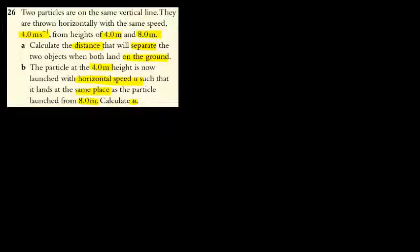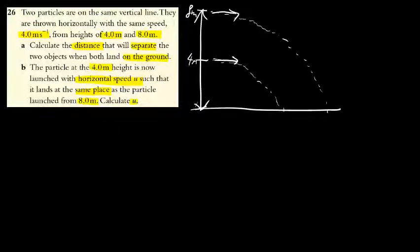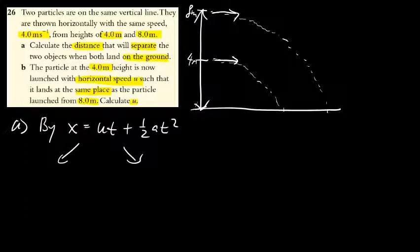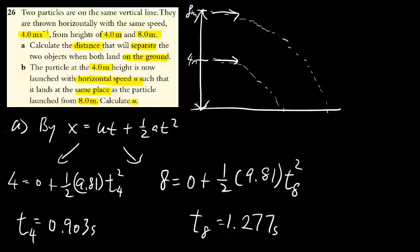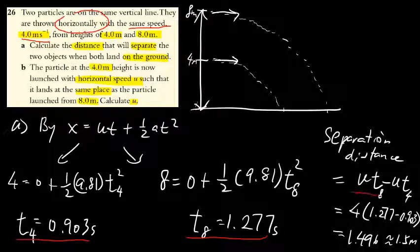The next question: you can see that the question can be transformed into a diagram like this. You consider the vertical motion, and using this equation, you should be able to find the time for 4 meters and x meters of the objects separately. Since the horizontal motion has the same speed, which is 4 meters per second, you can find the separation distance by calculating the horizontal displacement and subtracting them. Therefore, you should be able to find 1.5 meters to be the separation distance.